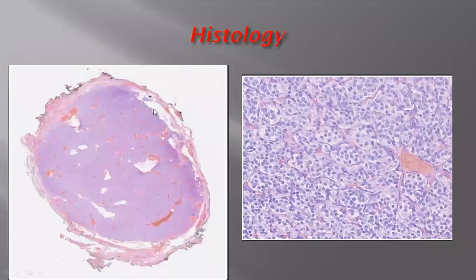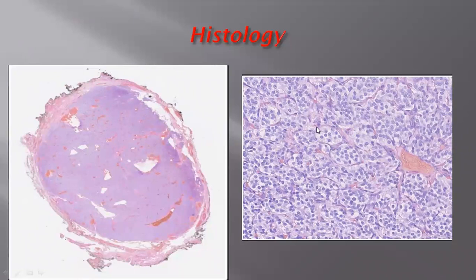This is the histology of paraganglioma. On low power, we can see the tumor is completely covered by the capsule and is very hypervascular. On high power, the tumor has a nested or lobular appearance forming the Zellballen ball-like pattern. The center cells are the type 1 chief cells, which mainly play a role in catecholamine production, while the surrounding cells are the sustentacular cells, stainable with S100. The type 1 chief cells can be stained with synaptophysin, chromogranin, CD56, and other neuroendocrine markers described earlier.